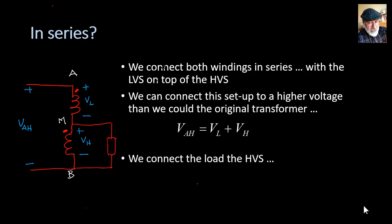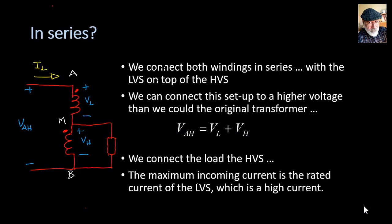And now we connect the load to the high voltage side, to VH. The maximum incoming current is the rated current of the low side. Why? Because that current IL will flow through that winding. Of course, it cannot exceed the specifications of that winding. So the maximum current I can feed into the whole arrangement coming from the left is the rated current of the low side.